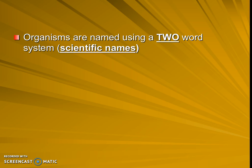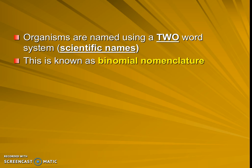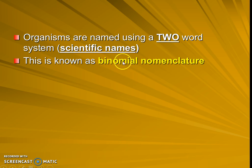This ends up becoming part of our really important scientific naming system, which is a two-word system. We have a fancy way of talking about this two-word system — we call it the binomial nomenclature. Try saying it with me: binomial nomenclature. Bi meaning two, nomial meaning naming system, nomenclature meaning system — so, two-naming system.